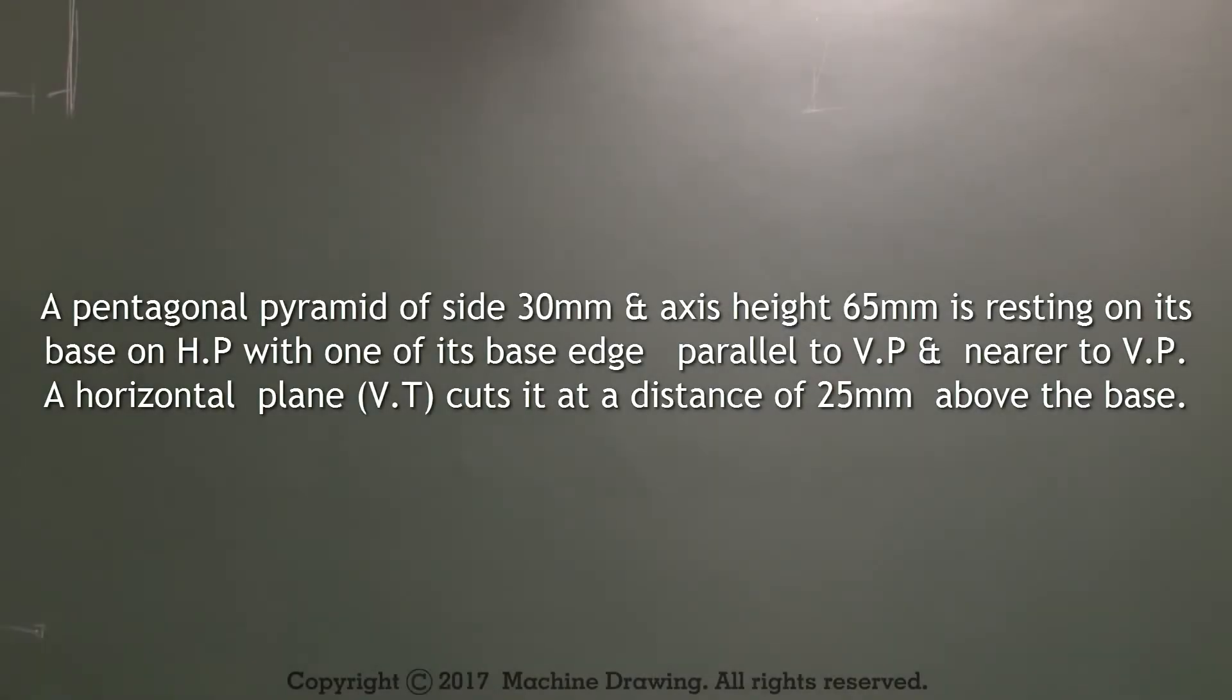A pentagonal pyramid of side 30mm and axis height 65mm is resting on its base on HP with one of its base edges parallel to VP and nearer to VP. A horizontal plane cuts it at a distance of 25mm above the base. Draw its front view and sectional top view.